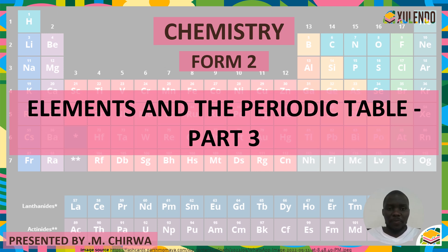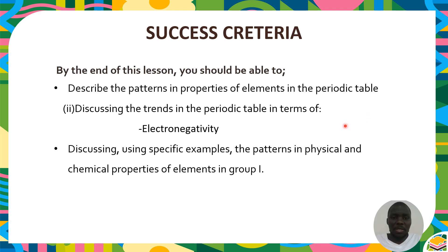Welcome back — this is Part 3 of Elements and the Periodic Table. In this video we'll continue from where we stopped. So far we have covered the trends in atomic radius, ionization energy, and electron affinity. The success criteria for this lesson include describing patterns in periodic table properties, specifically discussing the trend in electronegativity, and discussing the physical and chemical properties of Group 1 elements using specific examples.